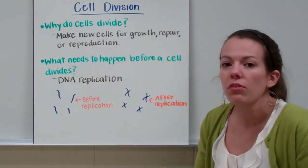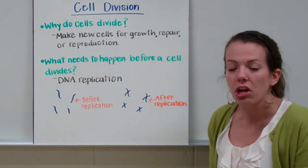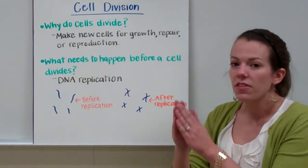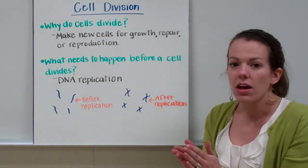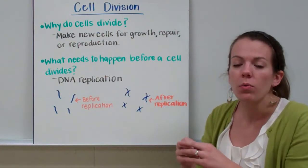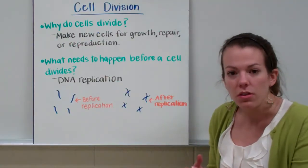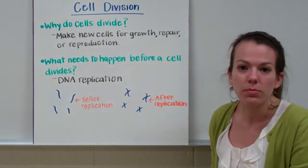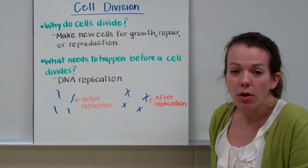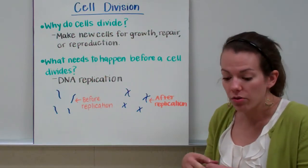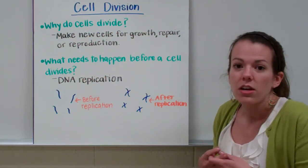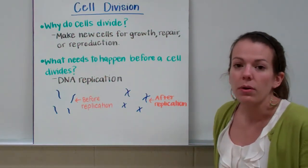Whenever you have a cut on your arm, the cells on the outside of the cut divide in order to fill in the cut with new cells, and those new cells will form a scar. Whenever you're growing, your body divides the original cells to make more cells to fill up your growing body.